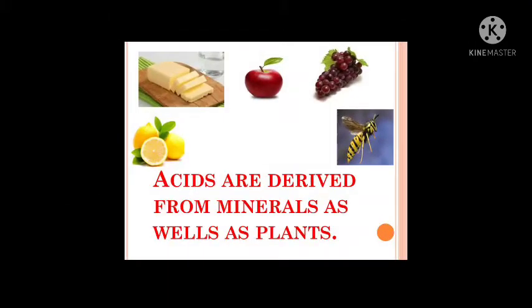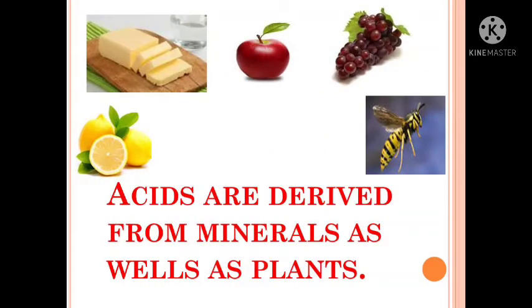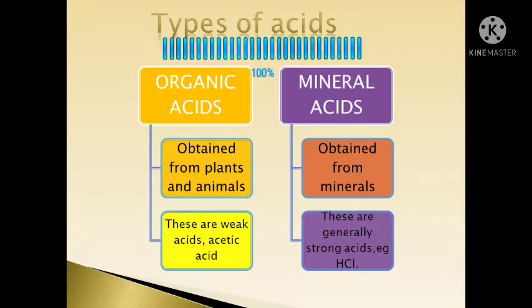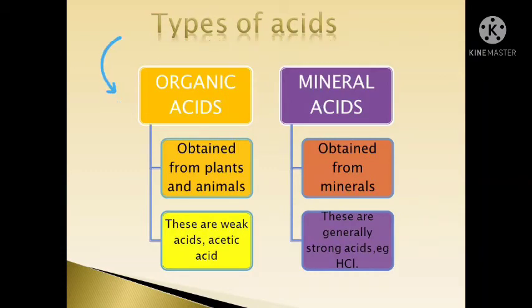Acids present in food items are weak acids. Children, there are two types of acids. Organic acids and mineral acids. Organic acids occur naturally in plants and animals. They are mostly weak acids.